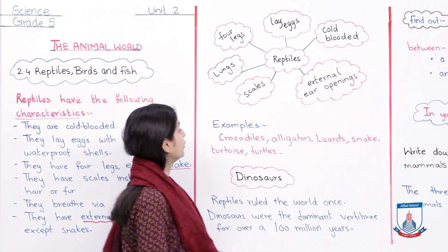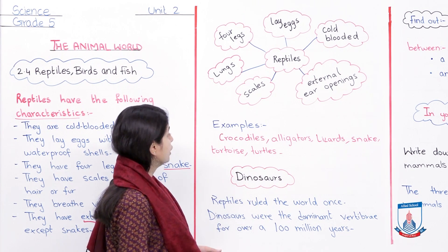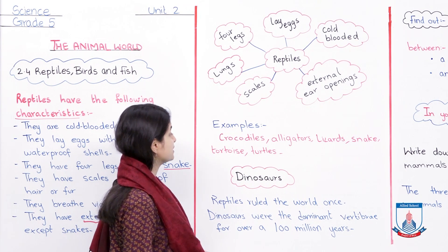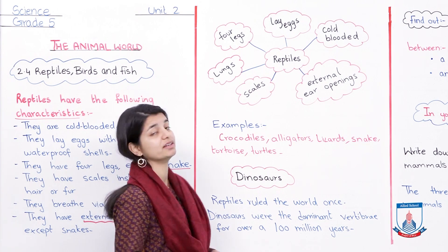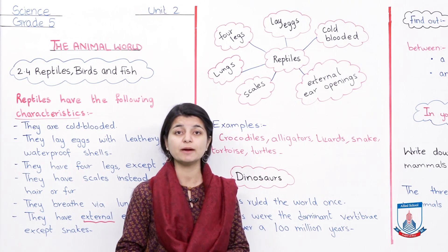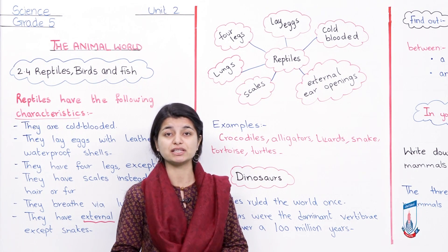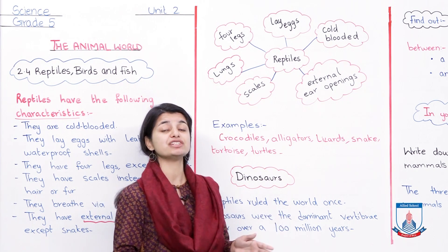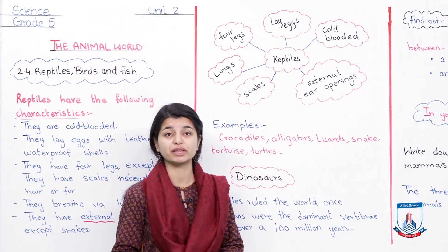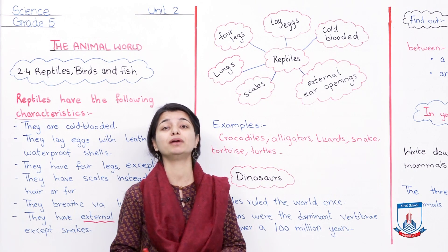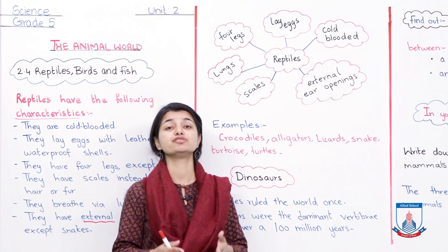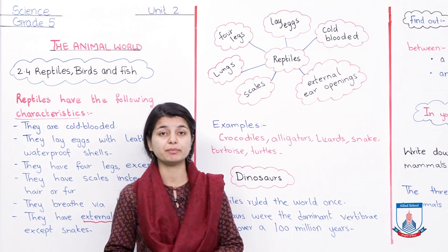Moving on, here are some examples of reptiles: crocodiles, alligators, lizards, snakes, tortoises, and turtles. You will have heard all these names before. These are all examples of reptiles — animals that lay eggs, have scales on their body, are cold-blooded, and have all the other traits present in any reptile.